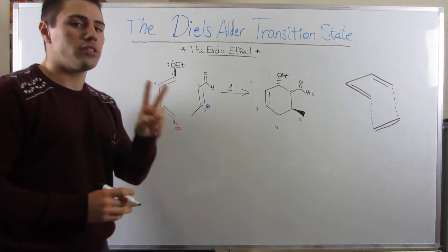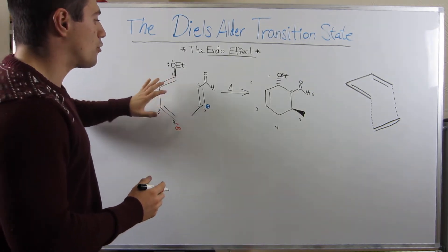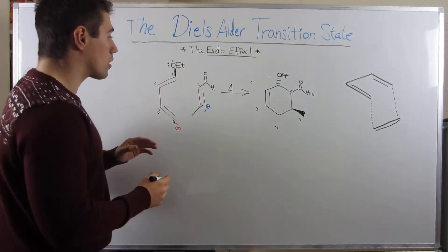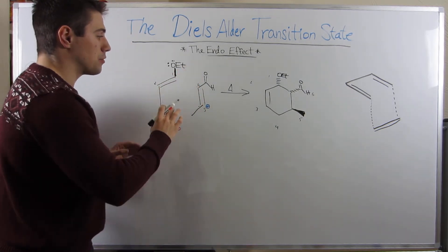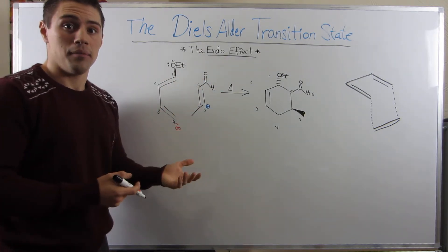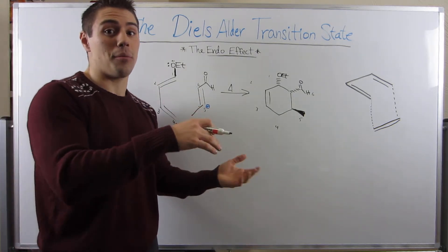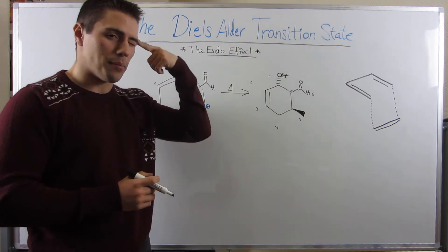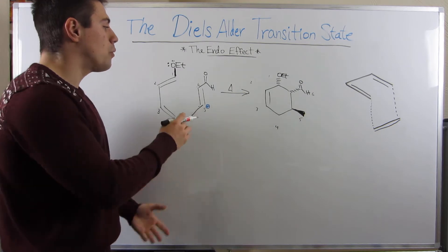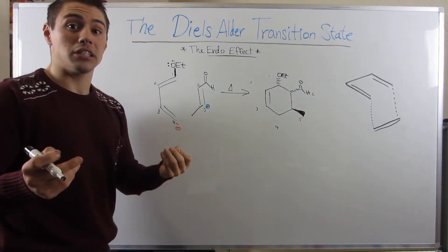So basically, we have two different scenarios here. We could have this diene hover over and have the methyl group be underneath it. Or we could have this diene pretty much hover over it and have the aldehyde be underneath it. So if you're a good ochem student, or thinking back to ochem 1, sterics might pop into your head. Well, this aldehyde group is pretty sterically cumbersome. Maybe we want to make sure it's kind of away out of the picture. And normally, you'd be right.